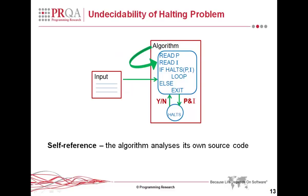Next, we need to create the self-reference. This is the same as the previous slide, except that instead of an arbitrary program, it's the algorithm that passes its own source code to the halt function. In this case, what the halt function returns is a prediction — it says you are going to halt or you are not going to halt. And then the algorithm does exactly the opposite. So now the question is: does the algorithm halt or doesn't it?